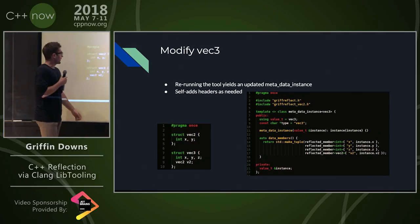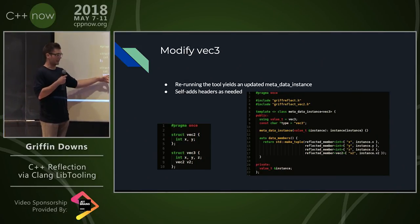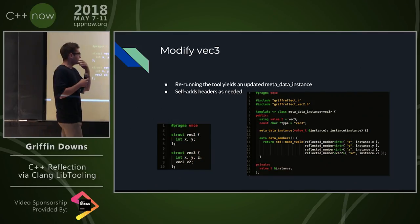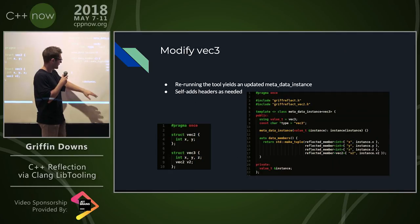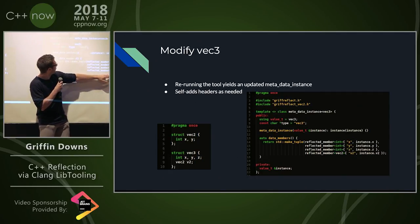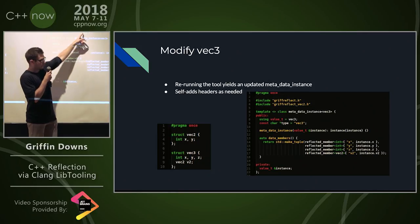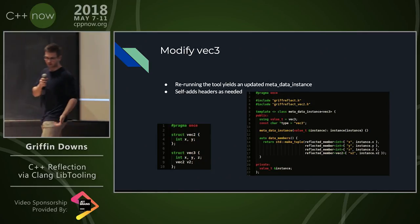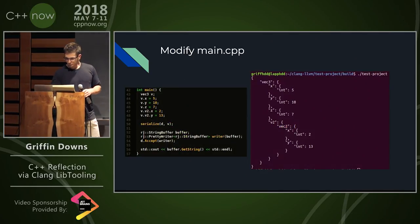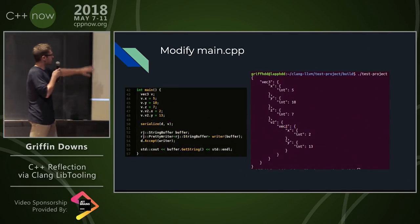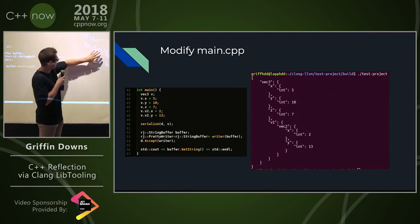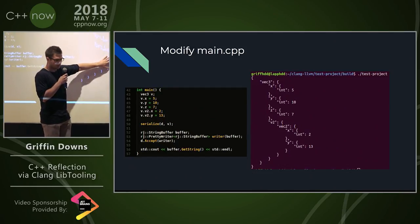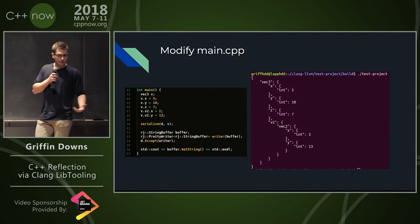Here is where it gets super cool. If we make some kind of a modification to Vec3 — say we want to pop Vec2 inside of there for demonstration purposes — we rerun the tool, and that gives us a modified metadata instance. You can see it has generated the Vec2 and included the header for Vec2. This is all just using information made available through the abstract syntax tree. We modify main.cpp, fill in those two extra fields, and when we run the program again, we are outputting all of the extra information. There was no work on the user's part — all they had to do was hit compile.